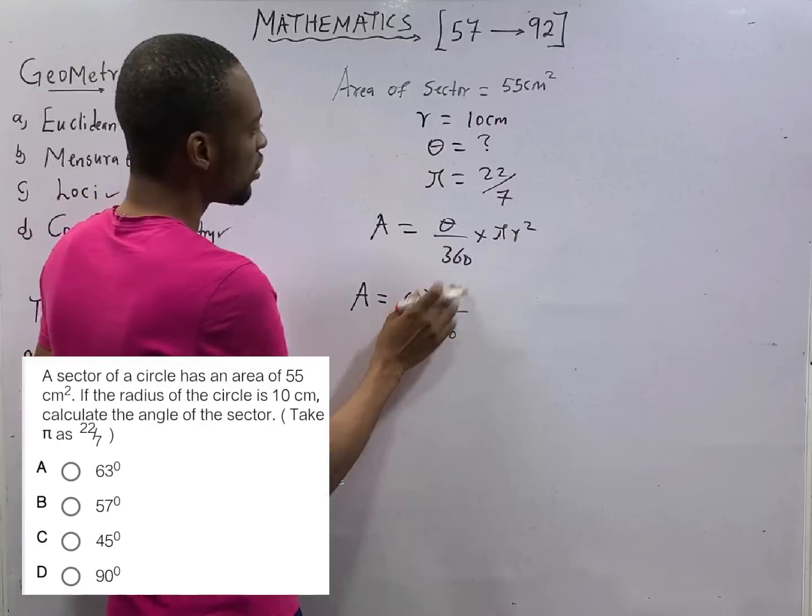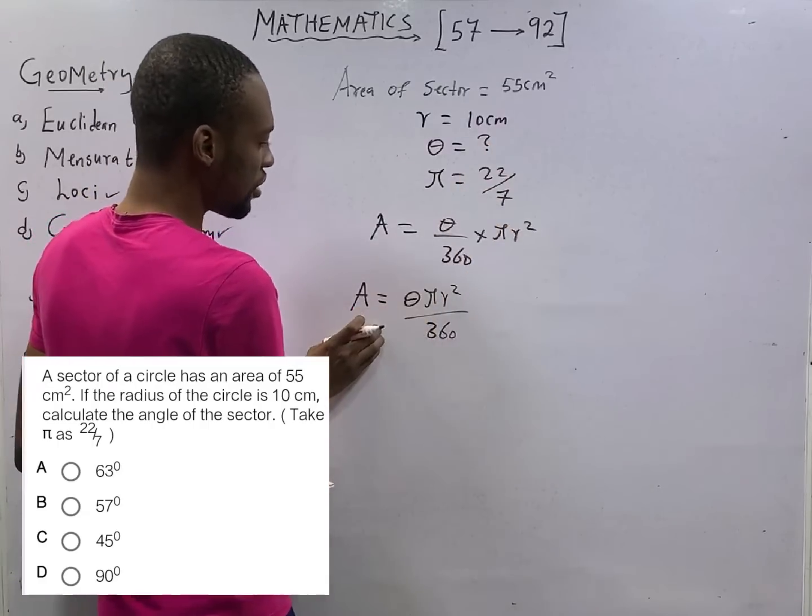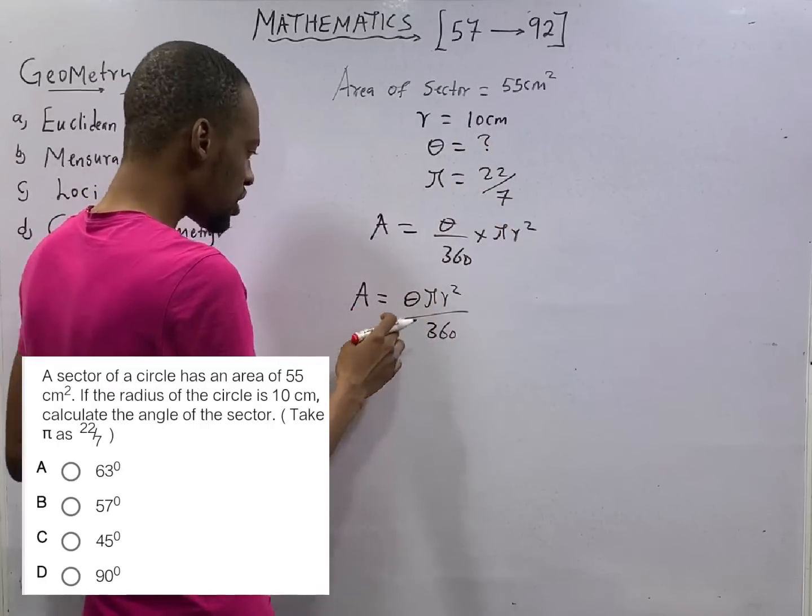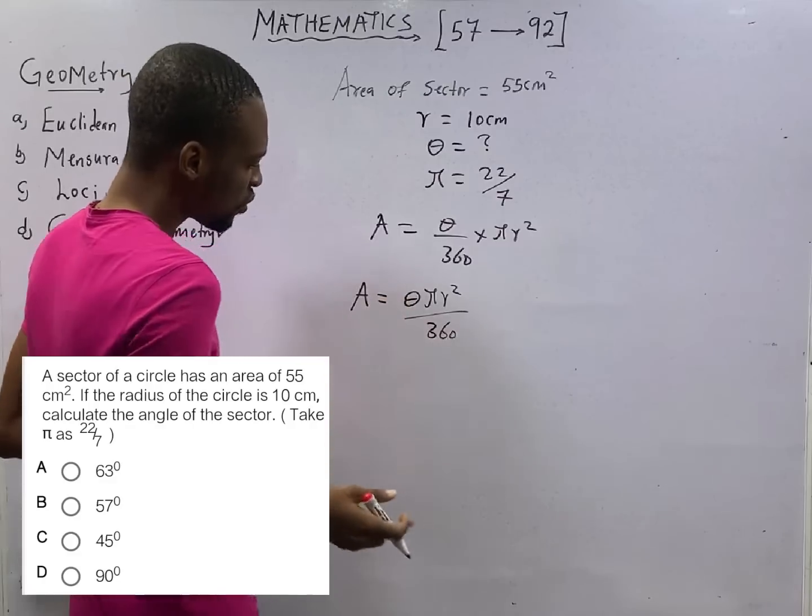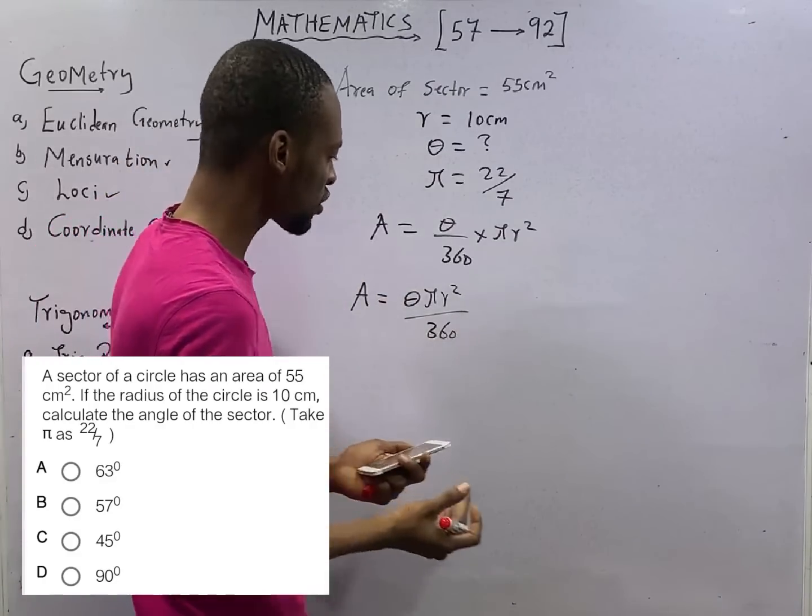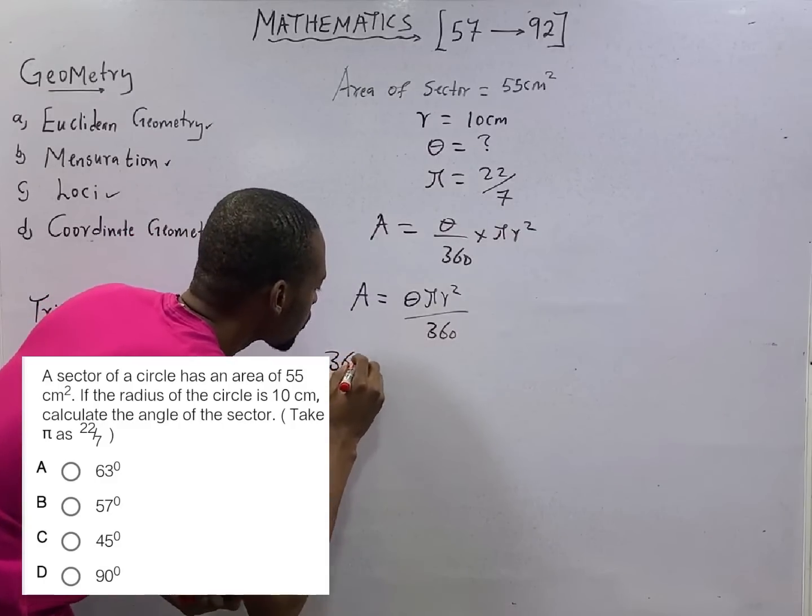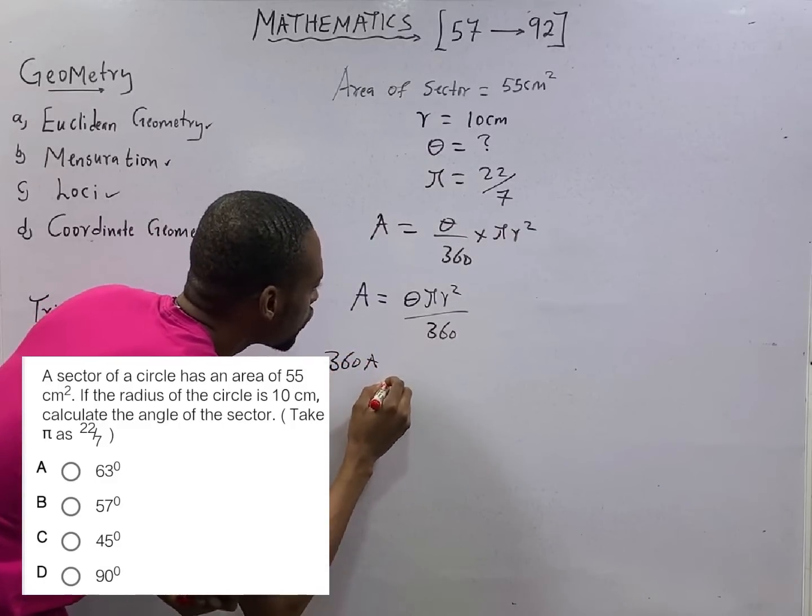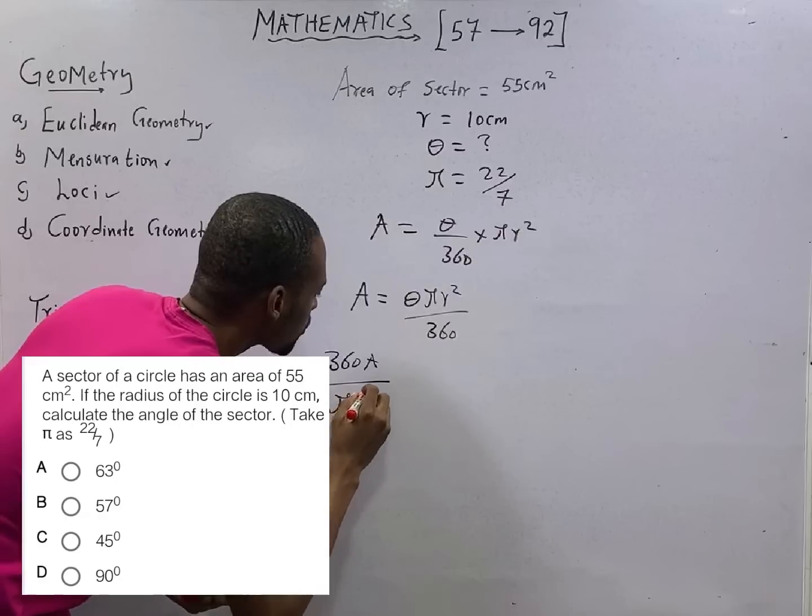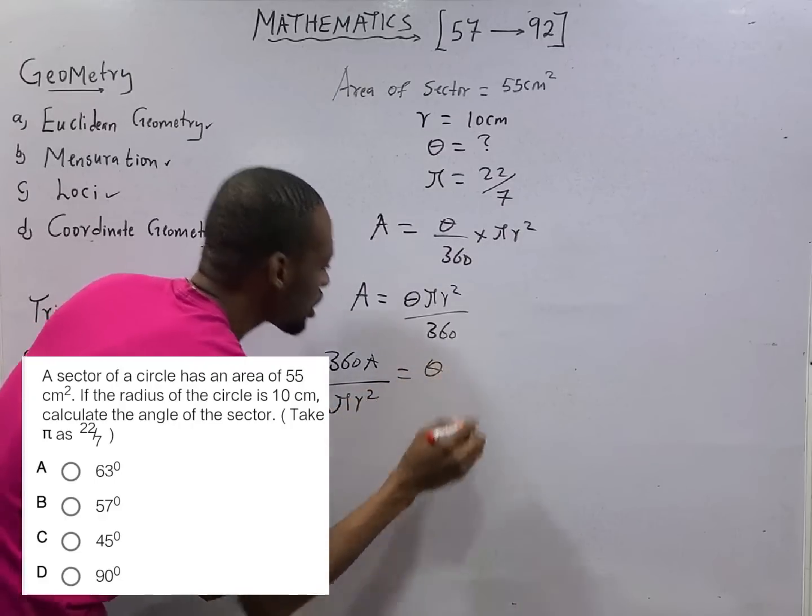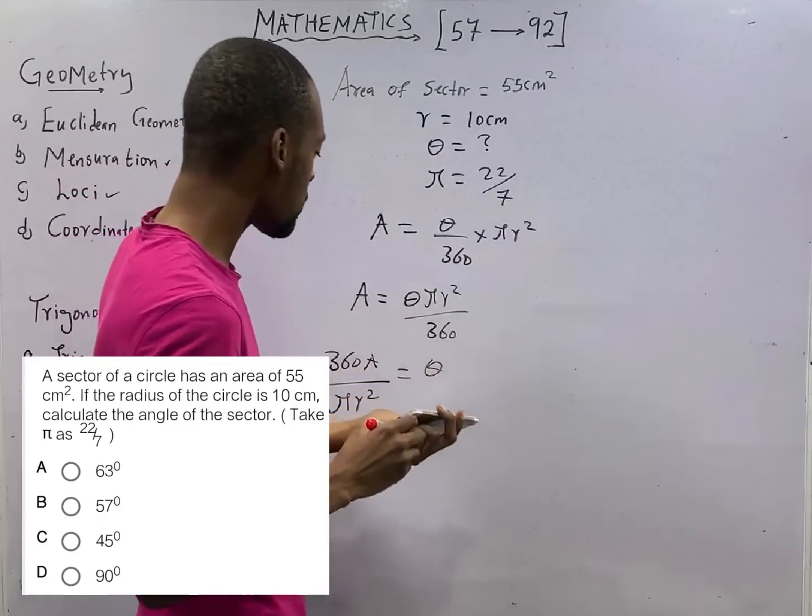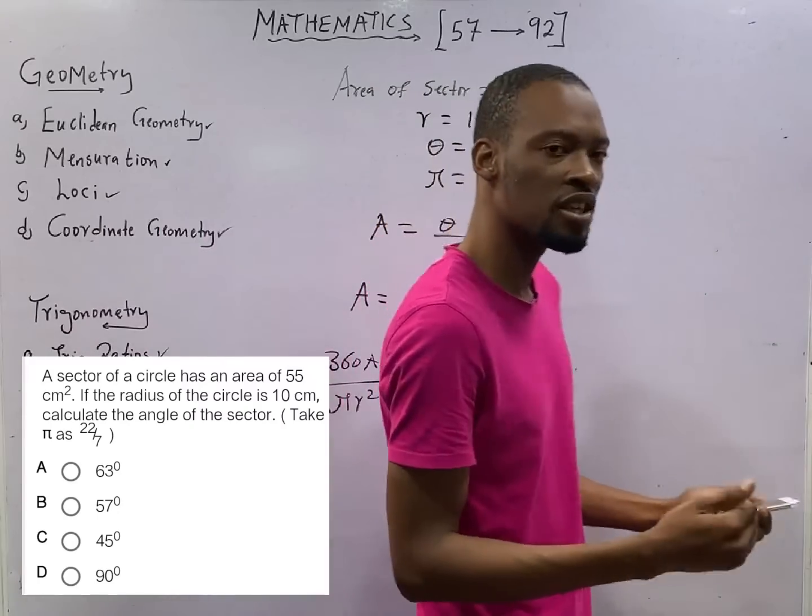Now this is the same thing as A equals theta pi r square over 360 degrees. We have pi, we have r, we have A. What we basically need is theta. With that we can make theta subject of formula to have 360A over pi r square equals theta.